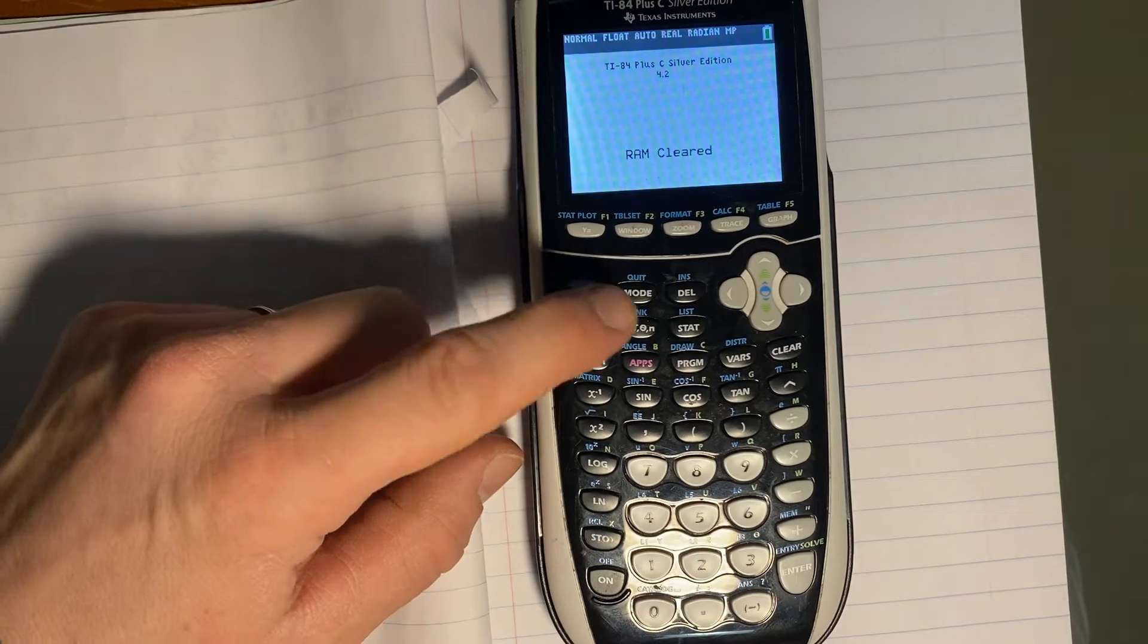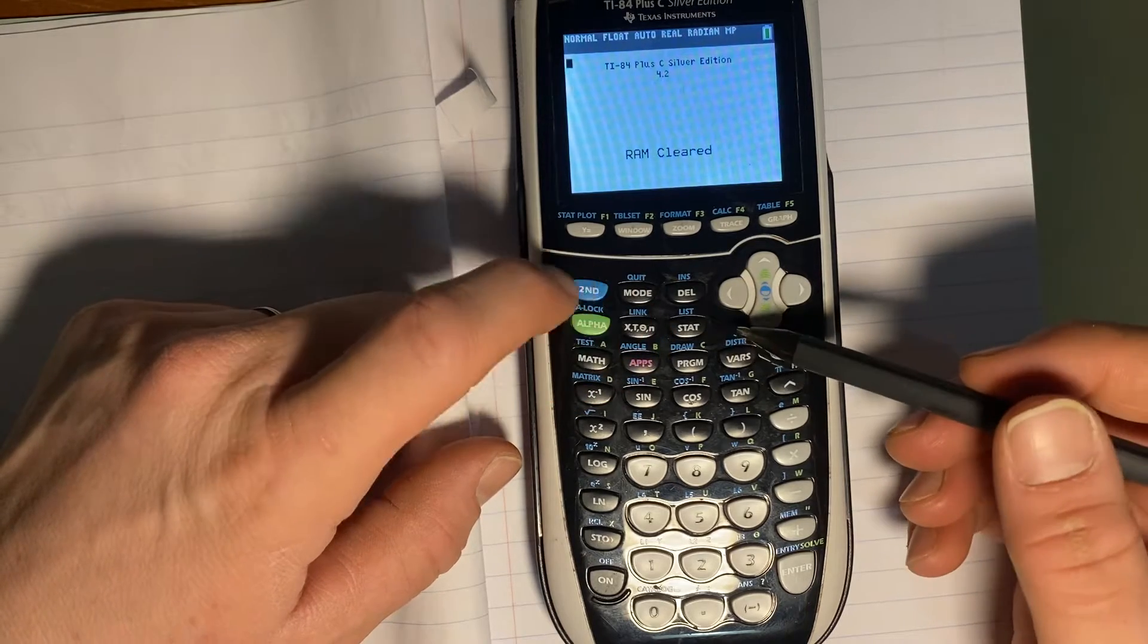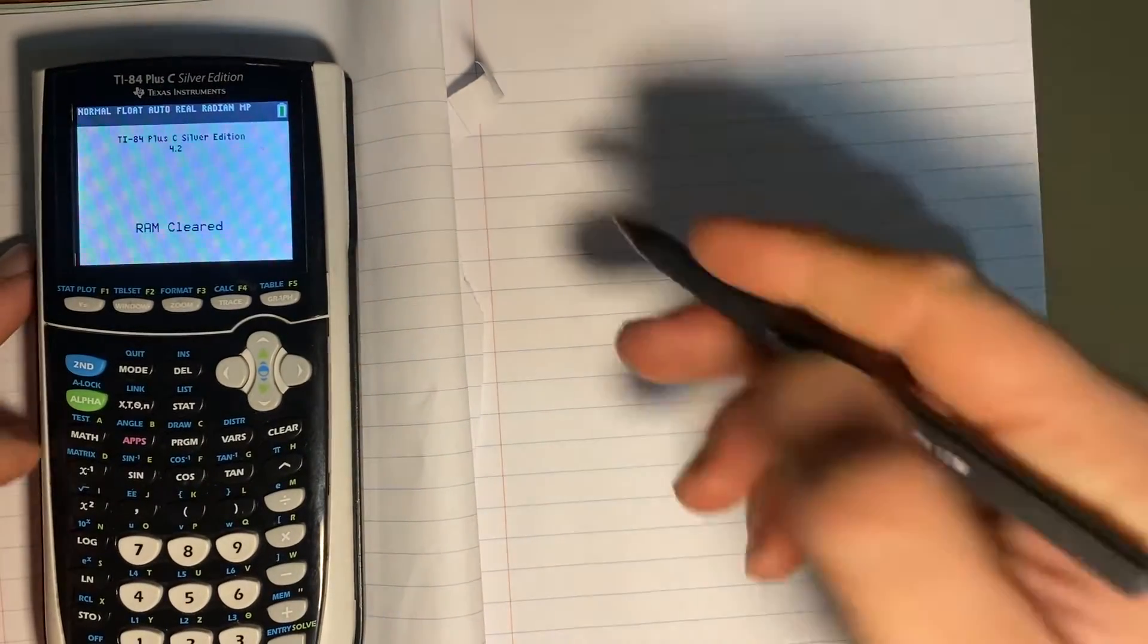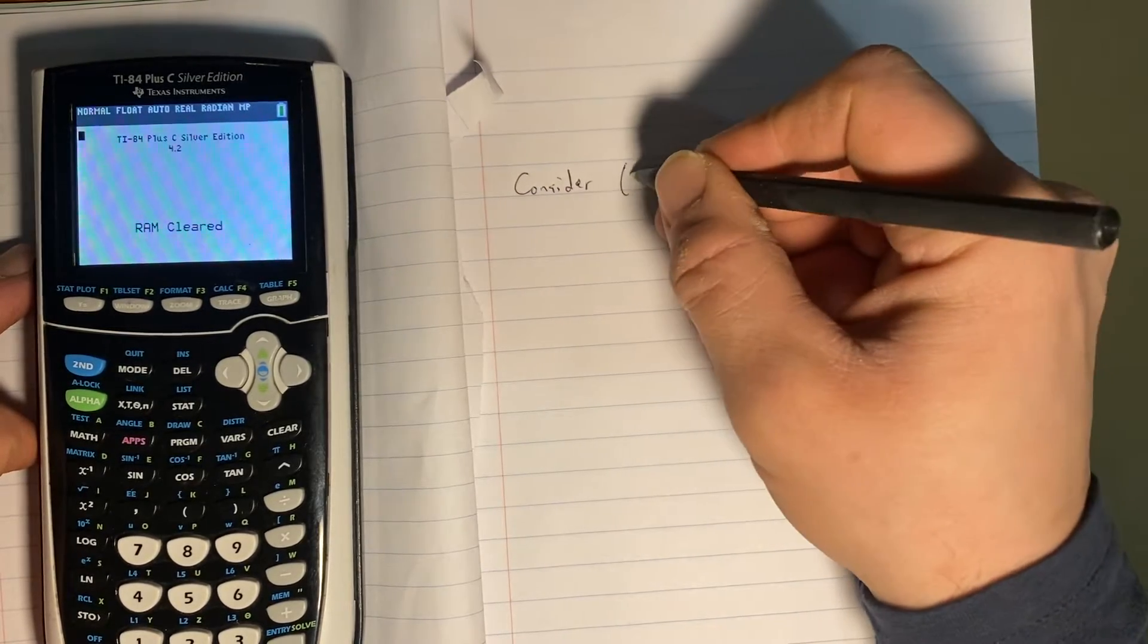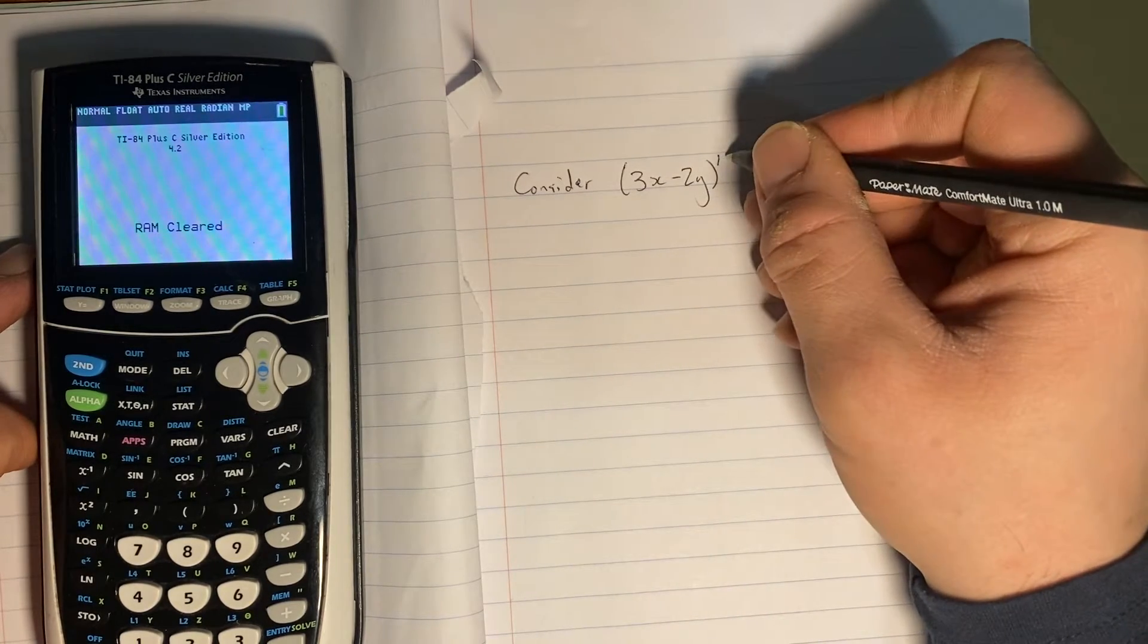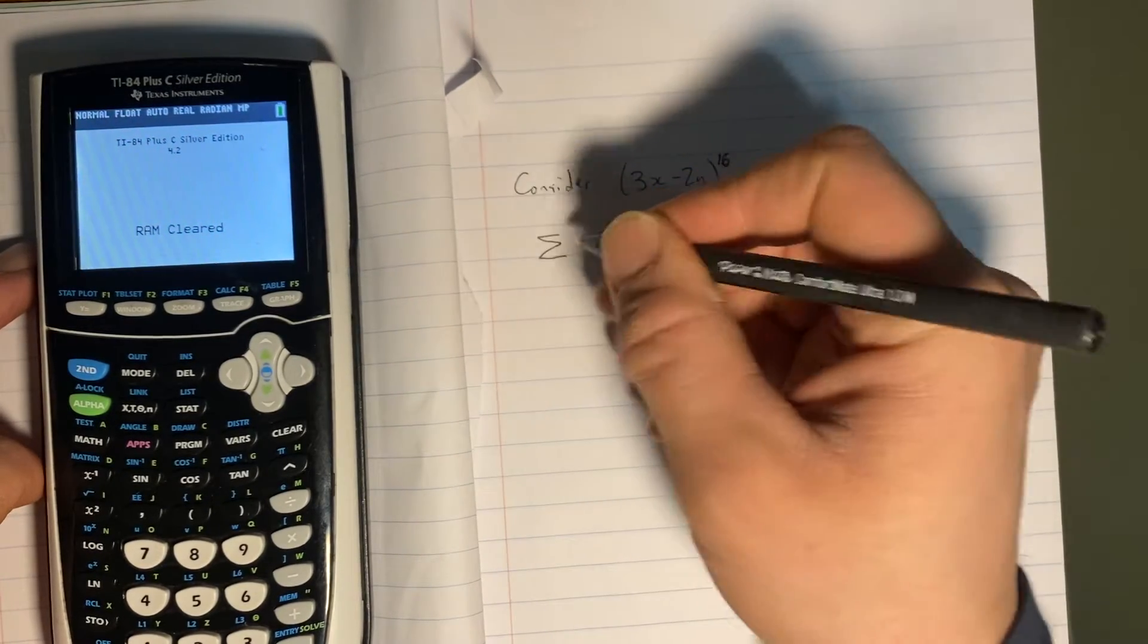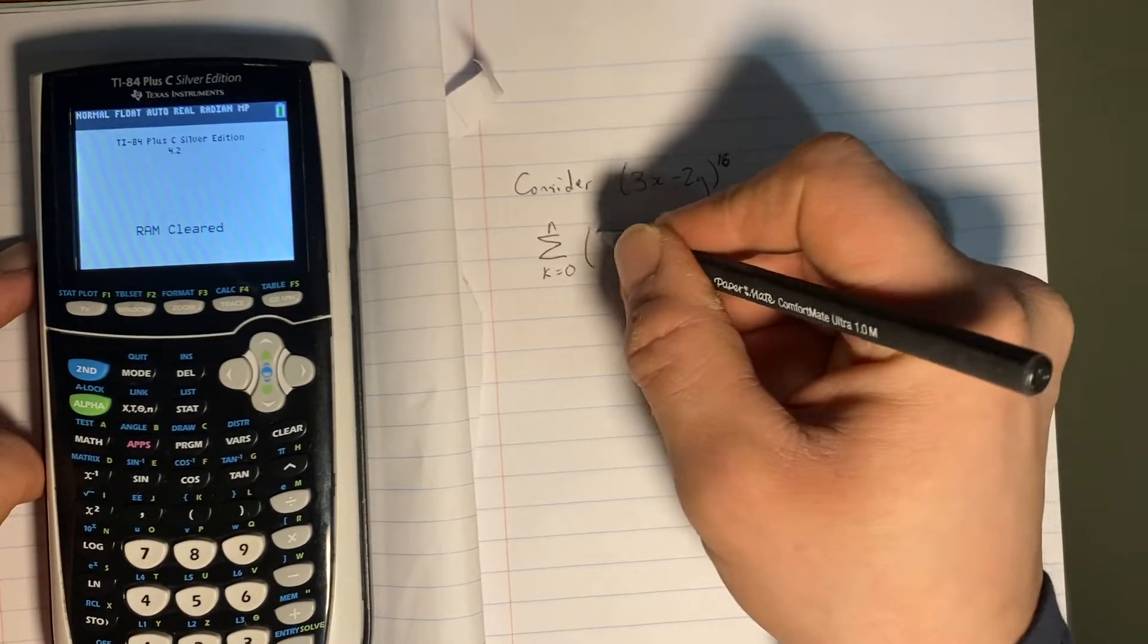So we're going to use primarily some of the features from the list option, which are in the stat button, and some of the stat features as well. That's going to be useful when we do some expansions. So first, let's take a look at a possible expansion here. So consider maybe something like 3x minus 2y to the power 16. So this would be a very ugly expansion to do using the binomial theorem. But the nice part is we have this kind of methodology to get to it. So we have our formula from k equals 0 to n of n choose k.